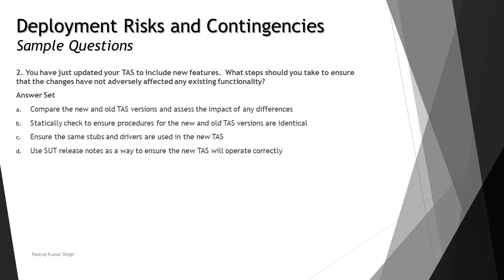Option A is to compare the new and old TAS versions and assess the impact of any differences. This seems the most relevant because by comparing new and old versions we can get a detailed impact analysis and understand the cost of any differences. Option B is to statically check that procedures for the new and old TAS versions are identical. However, procedures will change as the TAS changes, so we cannot expect them to be identical across versions.